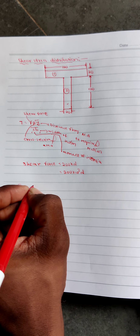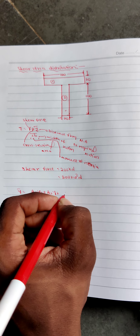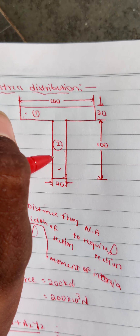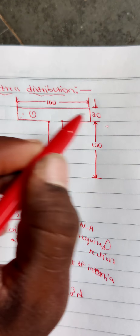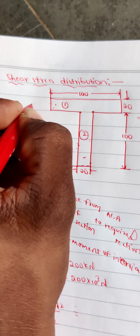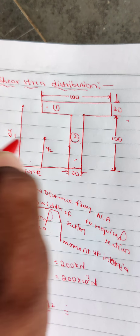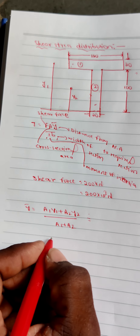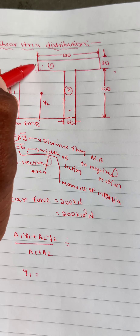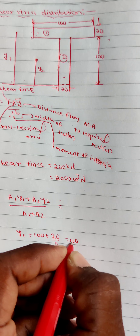For Y-bar we have the formula: A1·Y1 plus A2·Y2 divided by A1 plus A2. Section 1 is the flange and section 2 is the web. Area of section 1 is 100 × 20. The datum is taken from the bottom of the T-section. Y1, from the bottom to the centroid of section 1, is 100 plus 20/2, which equals 110 mm.